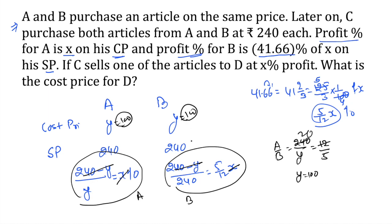If we have any multiple change in a question, we need to work on the basic equation. We find profit, which is x percent on cost price, and profit which is 5 by 12 of x on selling price. Both percentage terms cancel out. We got y is equal to 100.